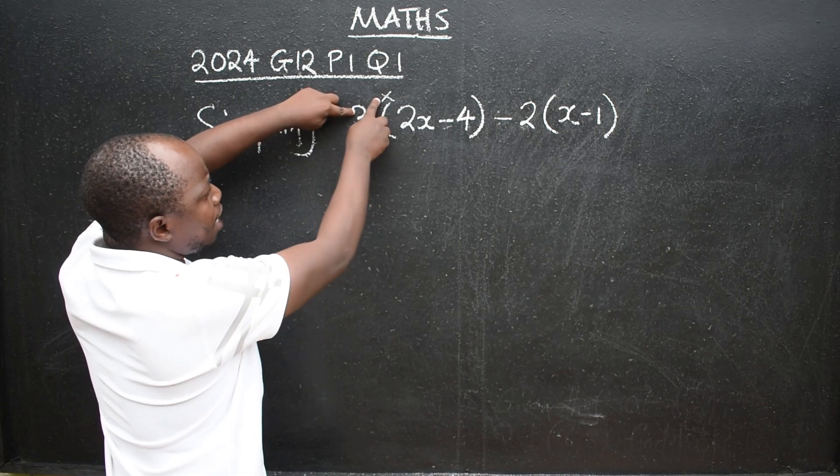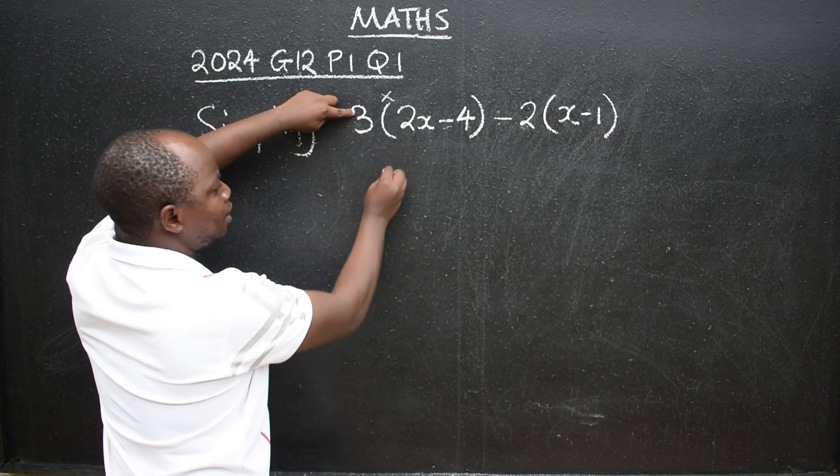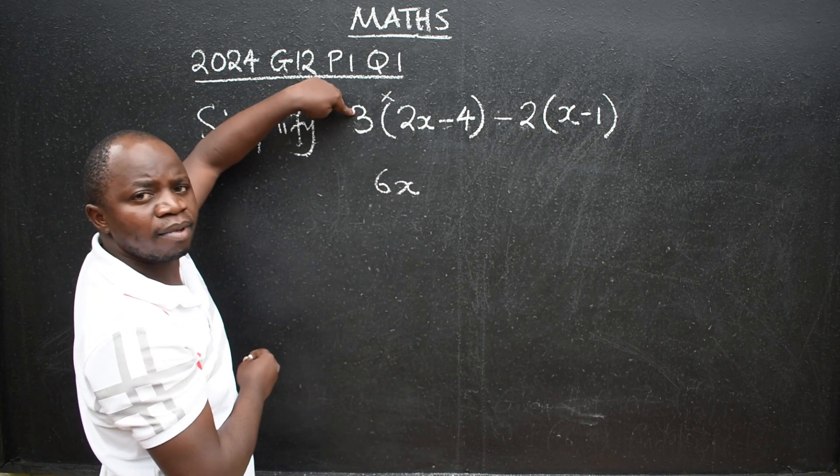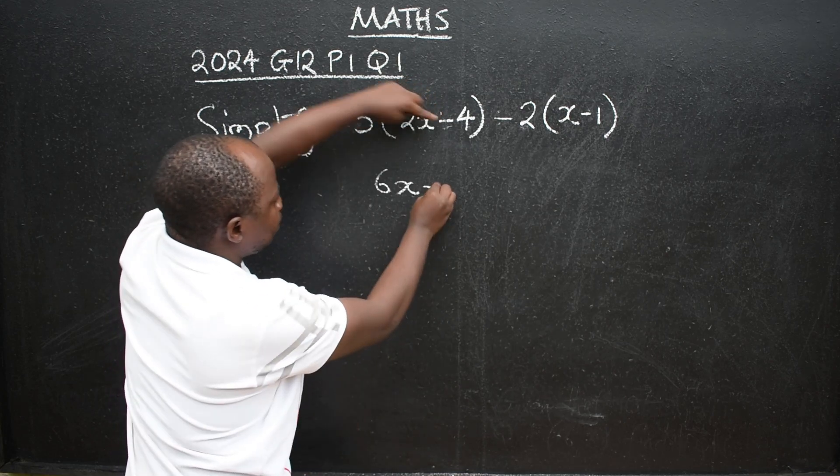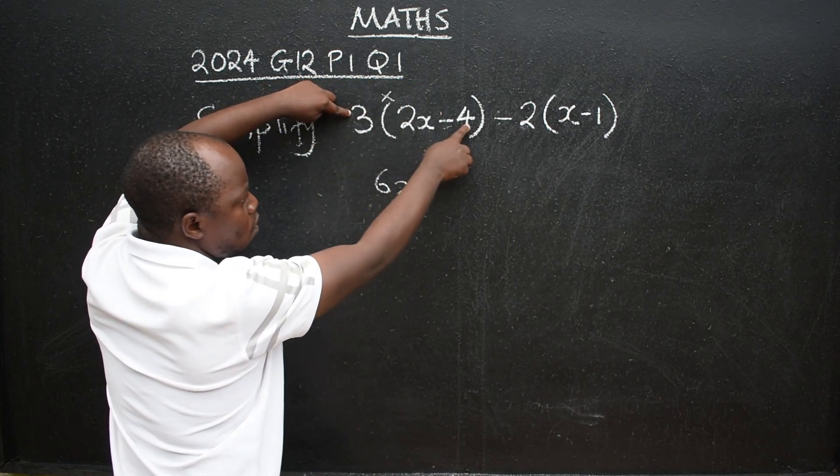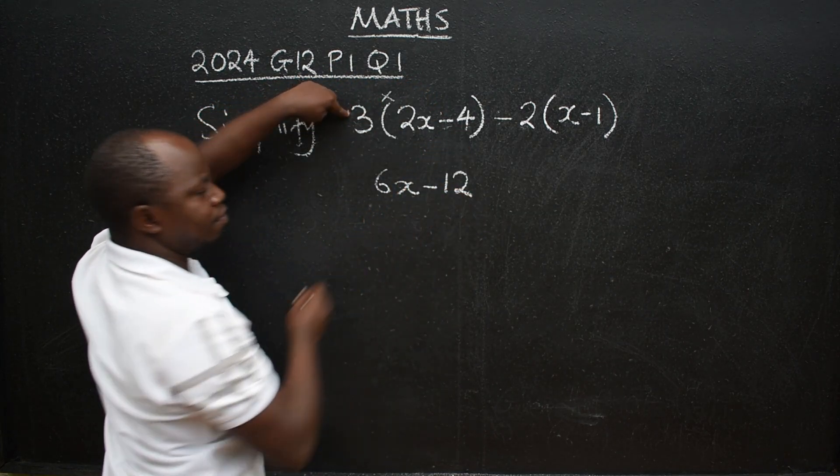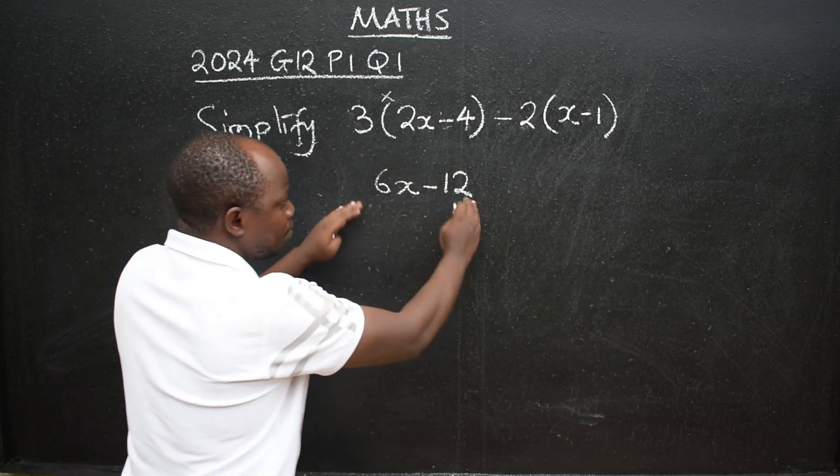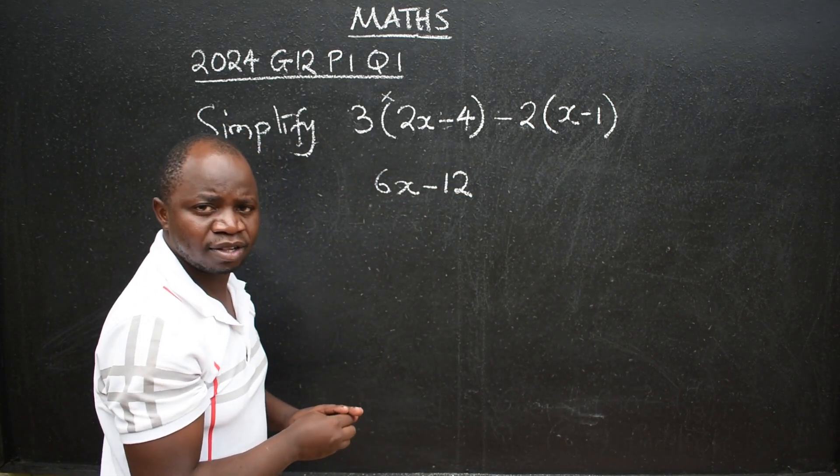So we are going to say 3 times 2x, it will be 6x, minus 3 times 4 will give us a 12. You have to remove the brackets. Don't add brackets. They are gone.